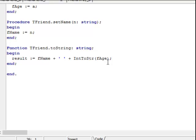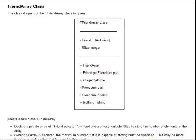So that's our first class. Here are the instructions for our friend array class. We know already that our friend array class must have an array as a field and that the elements of this array will be the objects we created in the friend class. Here's our class diagram of the TFriendArray class. It has two fields. They are private because there are little minuses in front. Friend must be an array of friends and fSize is an integer. The only difference now is the fact that we suddenly have an array of objects.